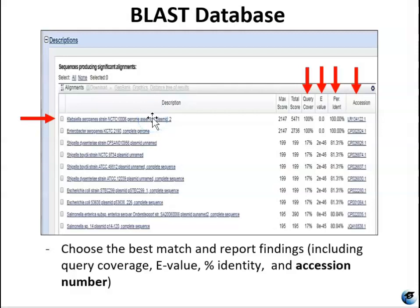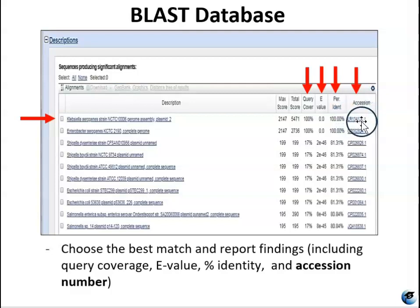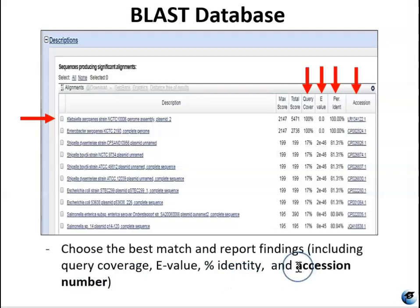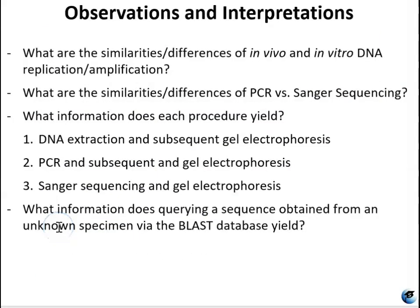When we use BLAST to identify our unknown sequence — say we figure out that our sequence came from Klebsiella aerogenes — we can't just say it matched that species and leave it at that. We have to give credit to the author that uploaded that sequence, and the way you do that is by reporting the accession number. When reporting your BLAST findings, make sure to include the query coverage, the e-value, and the percent identity as statistical data. The accession number gives credit to the person who uploaded that sequence to the database. You also want to cite BLAST itself — the citation for BLAST is included in your guidelines for reports.